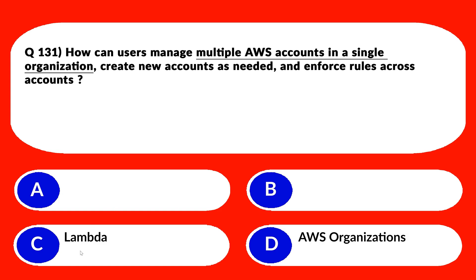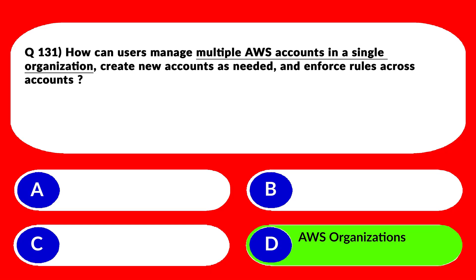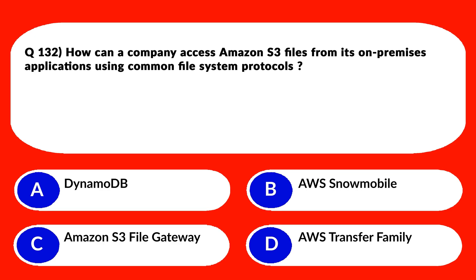Let's look at option C. C says Lambda. Lambda is a serverless compute service — again an incorrect choice. We are left with AWS Organizations. It's written that AWS Organizations is an account management service that enables you to consolidate multiple AWS accounts into an organization that you create and centrally manage. That's what is required, so we'll lock option D as the correct answer.